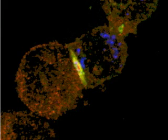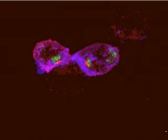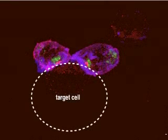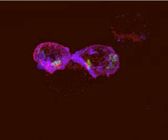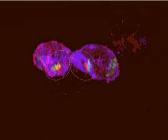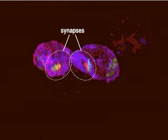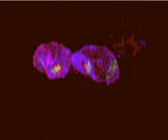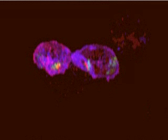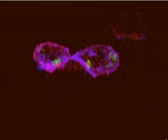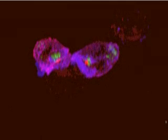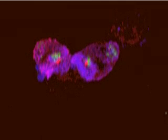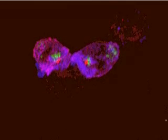Multiple synapses can be formed with the same antigen-presenting cell, as we see here, where two CTLs are trying to kill the same target. Each has formed a synapse organized into discrete signaling and secretory zones. The signaling zones are indicated by the presence of the red-stained signaling molecule, LCK, while green-labeled cytotoxic granules can be seen clustered just behind the synapse itself.